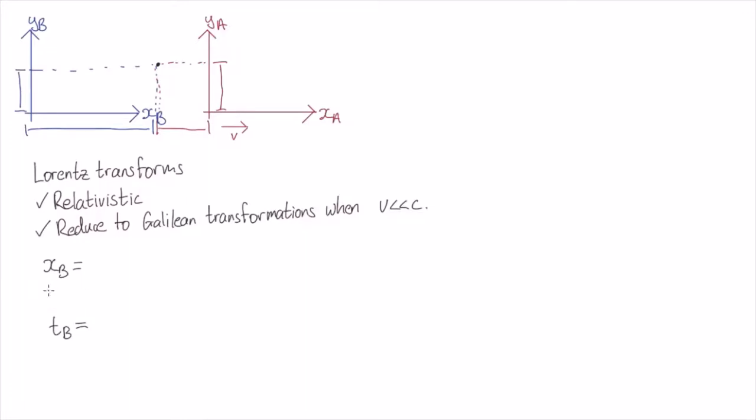We can start by seeing how we transform the y-coordinate between frames. With the x-coordinate, we can have things like length contraction - a train in Alice's frame will have a different length than in Bob's frame. However, there is no length contraction along the y-axis. To see this, let's suppose there was length contraction in the y and z directions. When an object moves really fast in the x direction, its y and z dimensions would contract.